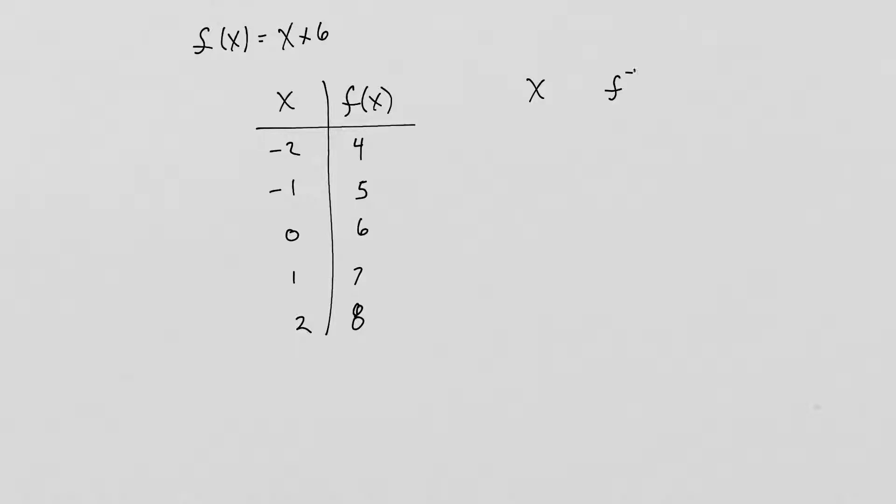So if I have my x and my F inverse of x table, all I need to do is take my F(x) column, and that is now my new x column. So I have 4, 5, 6, 7, and 8.